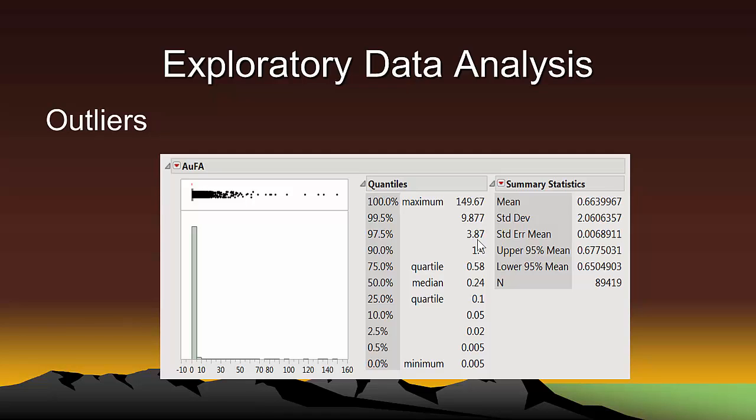And thus my suggestion is to delete all blast hole samples with a grade of 3.87 grams per ton or higher from the sample variogram calculations. Then, at least, the final variogram model should be an accurate model of the spatial continuity of 97.5% of the data.